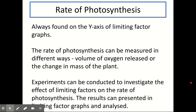The rate of photosynthesis is basically how quickly something happens over time, and this is always on the y-axis of a limiting factor graph. Rates of photosynthesis can be measured in different ways. You could measure the volume of oxygen released over time — counting the number of bubbles produced by a plant like Elodea underwater, dividing by time to get the rate. The quicker the bubbles are produced, the higher the rate. You could also measure the change in mass of the plant. Experiments can be conducted to investigate the effects of limiting factors on the rate of photosynthesis, and the results are presented in limiting factor graphs that you need to be able to analyse.